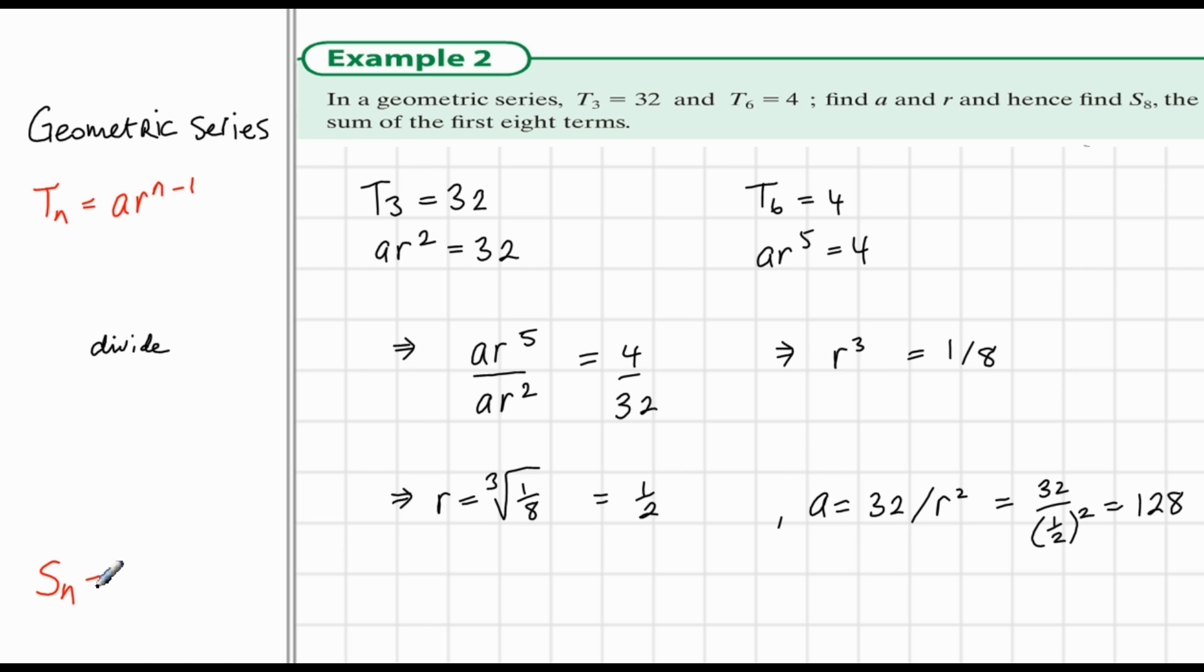Now, we want to find what the sum of the first 8 terms is. So first we write down the formula. The sum of n terms is a times 1 minus r to the power of n divided by 1 minus r. So in this case, for S of 8, we're subbing in 8 instead of n.